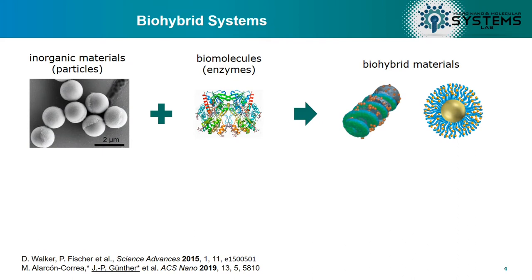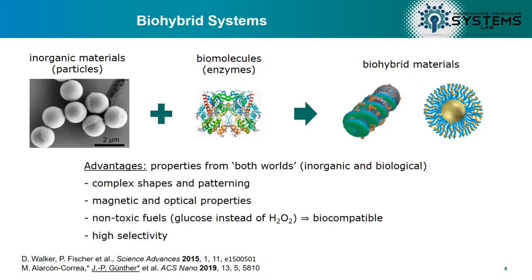For the applications, we are using a biohybrid approach. In a biohybrid approach you combine inorganic materials like nanoparticles or microparticles with biomolecules — in this case enzymes — to get biohybrid materials. This approach has several advantages since you can combine the best of both worlds. From the inorganic material side you get complex shapes and interesting properties like magnetic or optical properties. From the biomolecules, especially enzymes, you get very high substrate selectivity and can use substrates like glucose instead of hydrogen peroxide, which are non-toxic and may be interesting for medical applications.